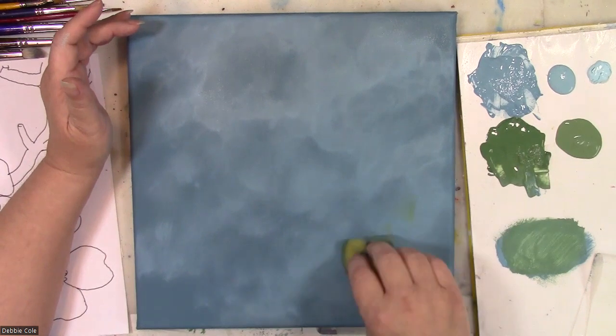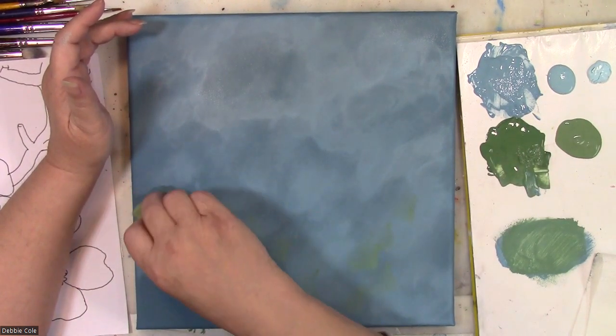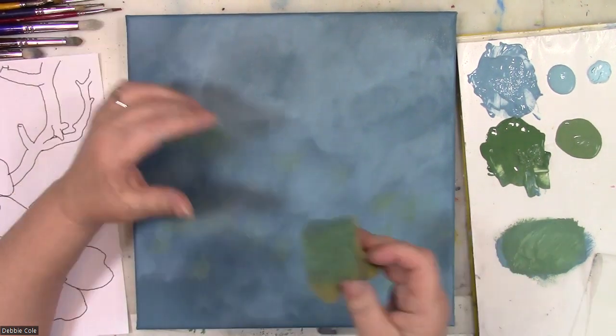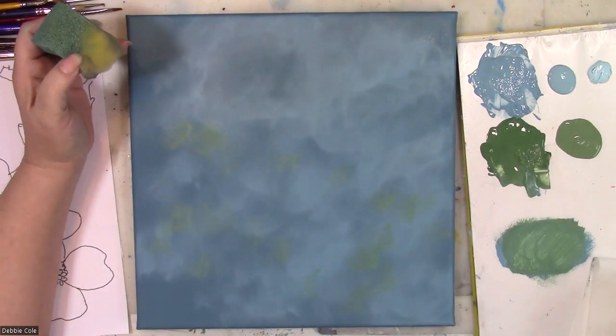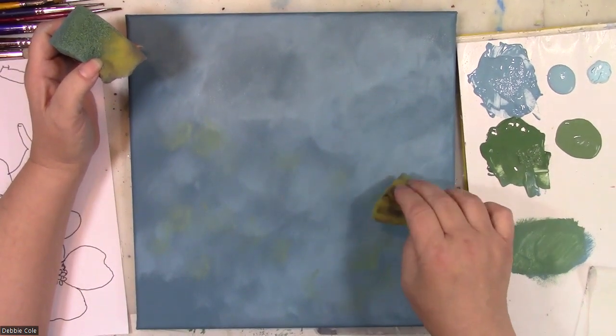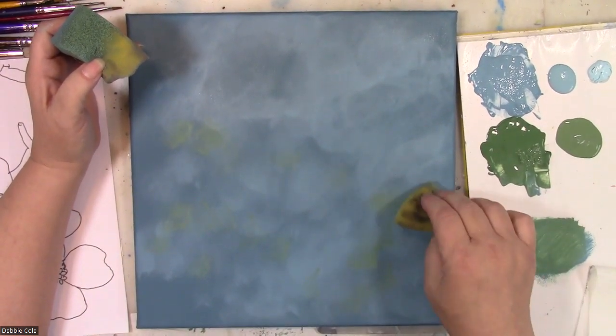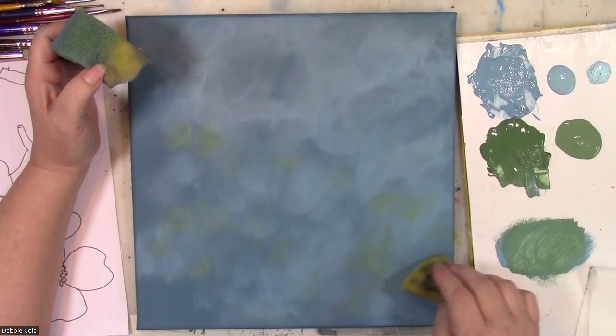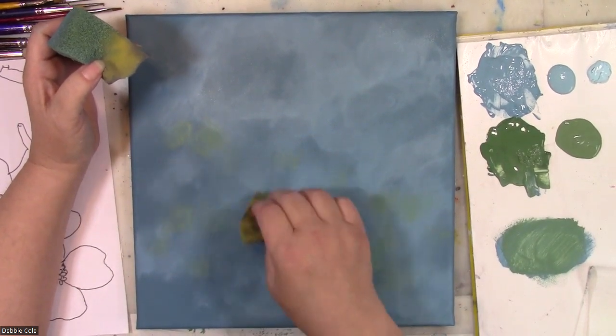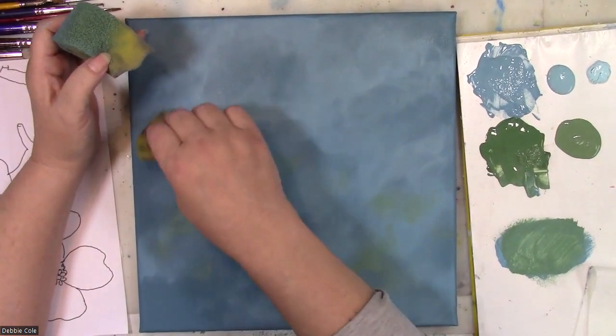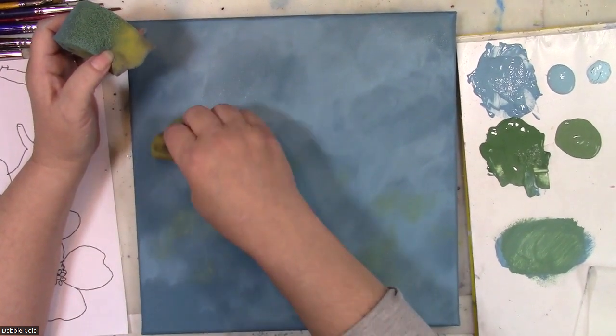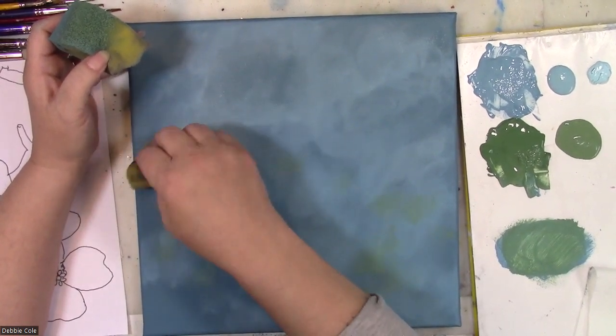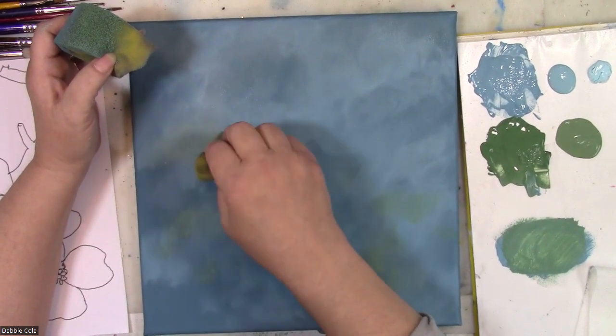Now what I'm going to do is just randomly put some of this color in. And again, I'm going to use my dampened sponge to soften. This is the indication that maybe we're seeing some leaves in the distance that are just blending in with these mottled colors.